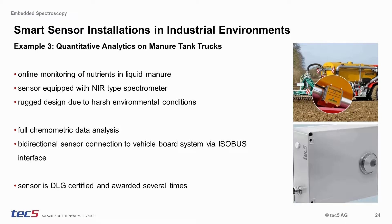The previous examples showed stationary installations in chemical or pharmaceutical production sites. Let us now look at a mobile application where we are still analyzing liquids but where the process requires a change in wavelength range. Example number 3 describes the quantitative analysis of nutrients in manure by NIR spectroscopy in tank trucks. Harsh environments require both suitable materials as well as a robust design of our smart sensor to ensure temperature stability and vibration resistance for use in the field. Different chemometric calibration models are automatically selected to cover a broad range of sample material. Through targeted nutrient-controlled application of farm manure, fertilization costs can be reduced and efficiency increased. The system is fully integrated into the data structure of the agricultural machinery via ISOBUS.